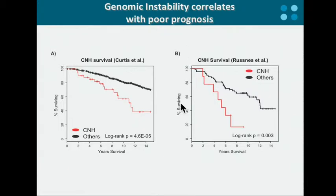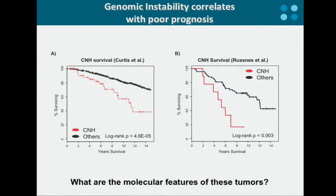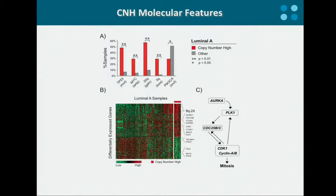We were pretty excited because we started linking this molecular heterogeneity with clinical variability. We then asked if we could pinpoint specific genomic features enriched in this subtype. Comparing the copy number high luminal A tumors against all other luminal A's, we found that these tumors are highly enriched for P53 mutation, MYC focal amplification, 20Q gain, 5Q loss, and are depleted for PIK3CA mutation that otherwise characterizes most luminal A tumors.